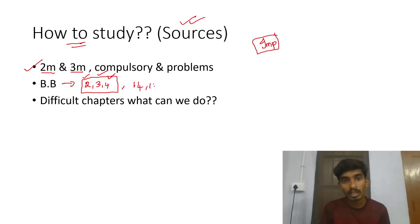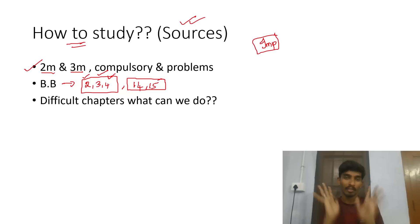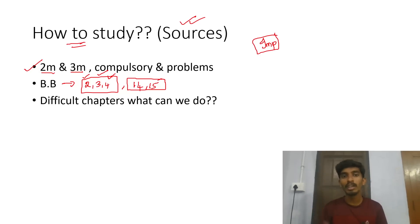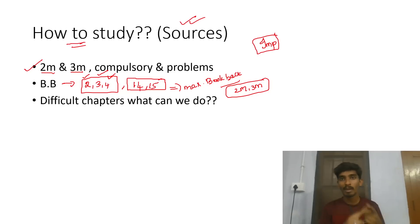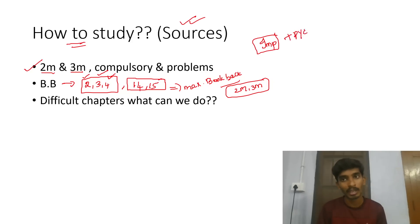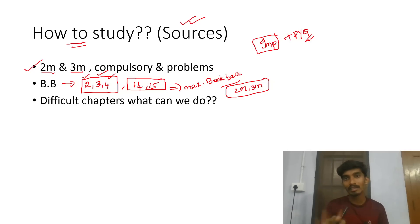The organic questions are in lessons 14 and 15 — this lesson will be the choice. In lessons 2, 3, 4, 14, and 15, the maximum number of questions are asked from the book-back. Book-back has the maximum questions — it's 2 marks and 3 marks.